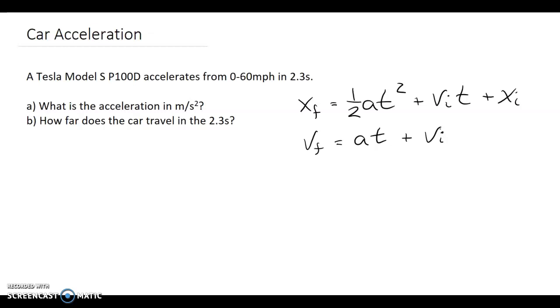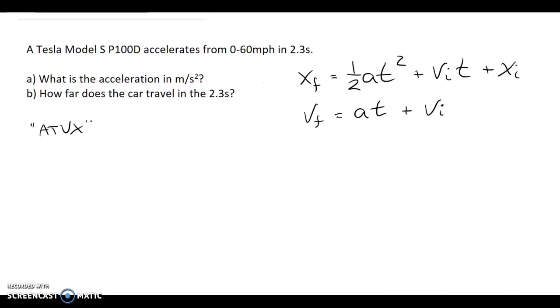So these two problems will solve any problem in this unit. If you look at the variables, we have acceleration, time, velocities, and positions. I like to organize these variables into a table to help us identify what we have and what we need to find. I call this an ATVX table, just a catchy way to remember what the variables are. So I'm going to write out A, T.